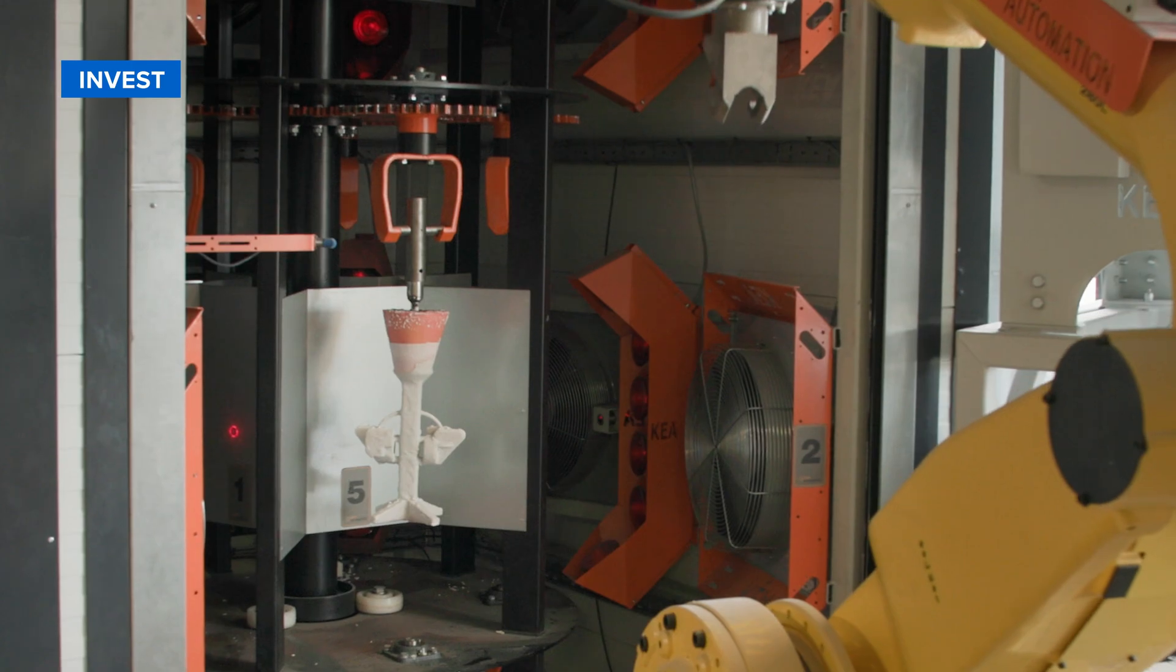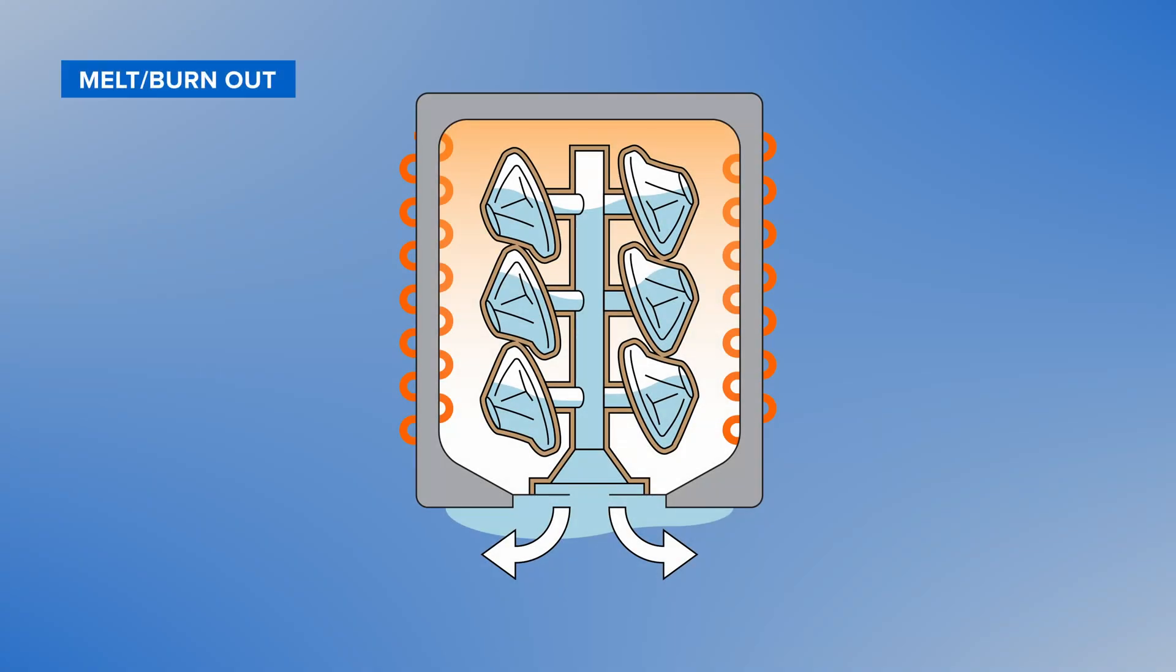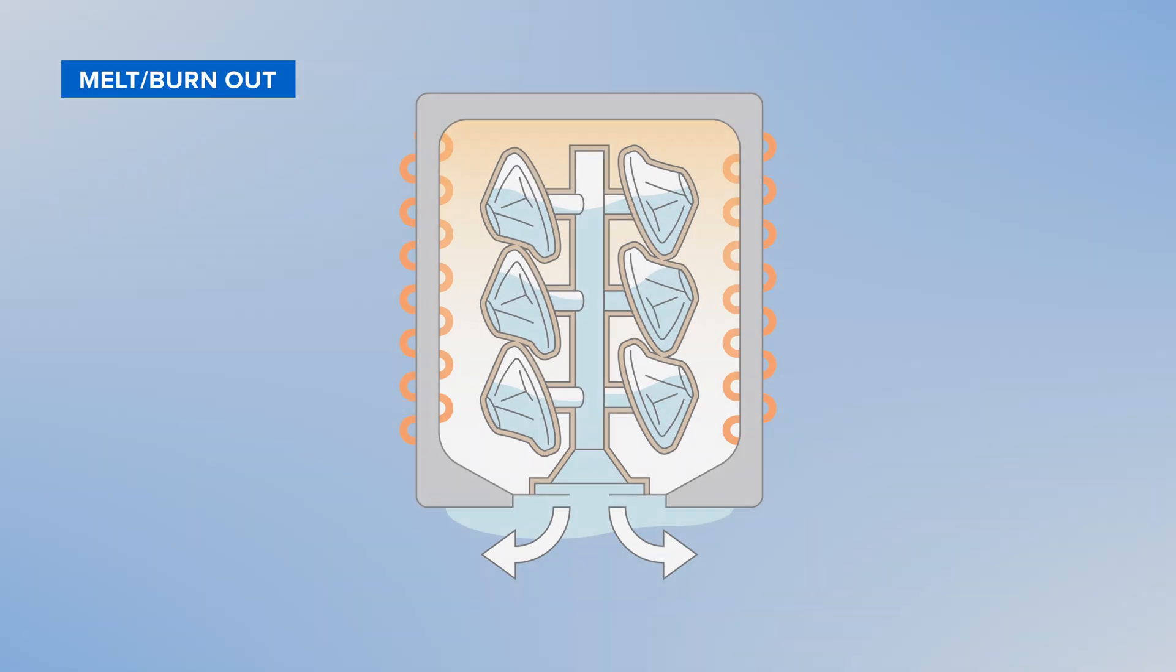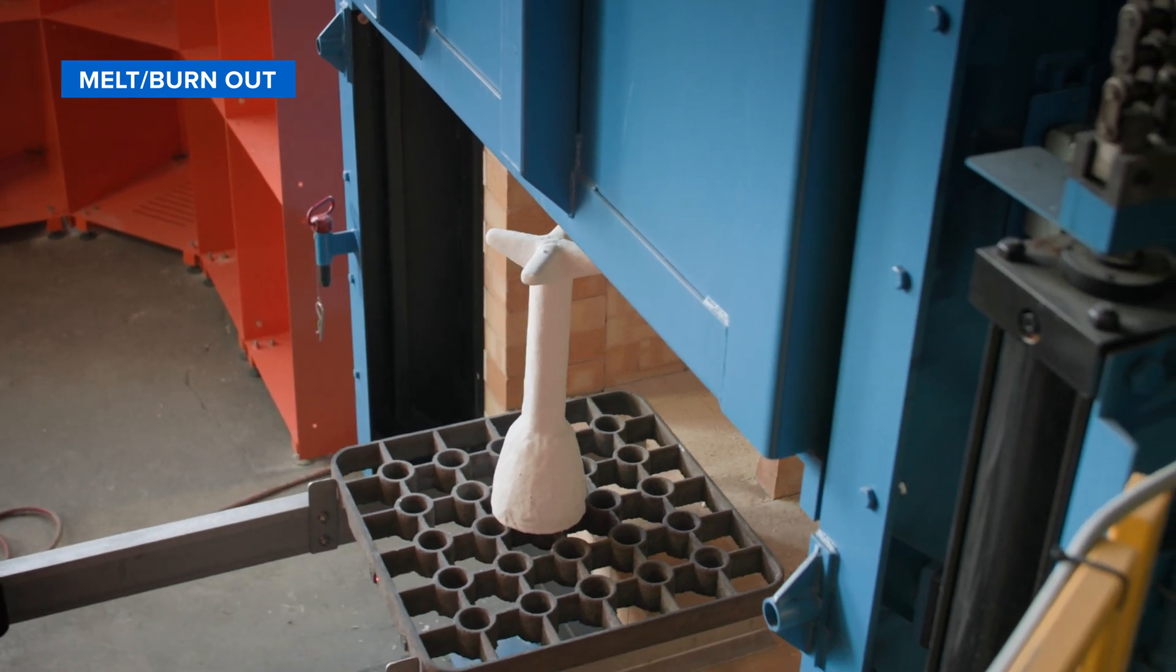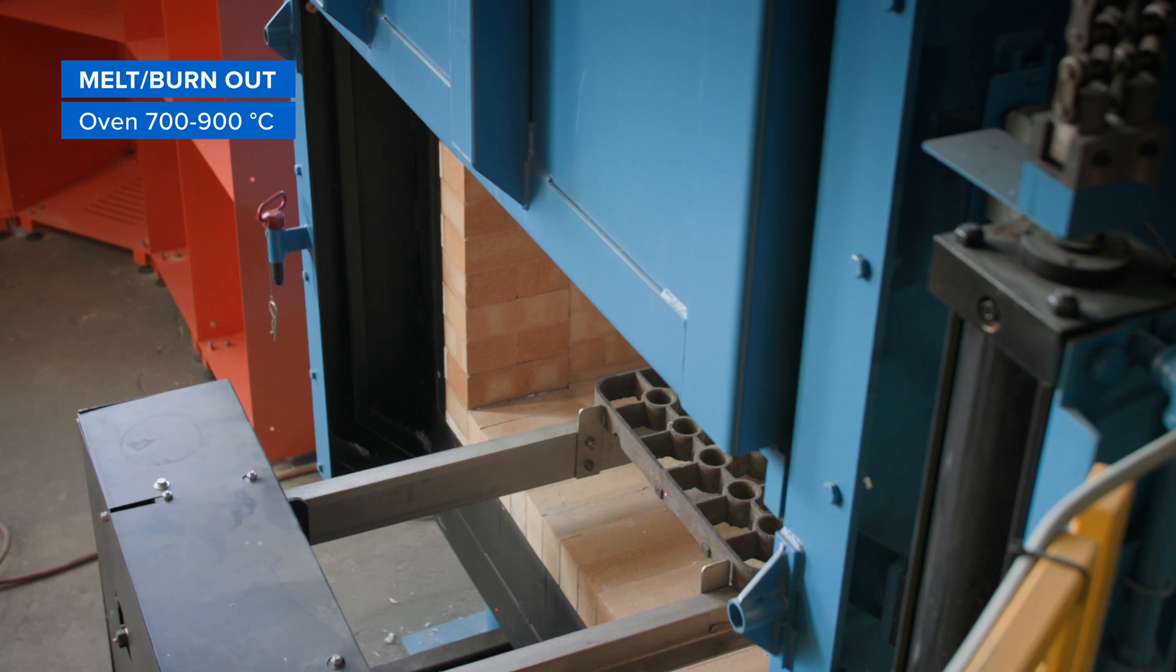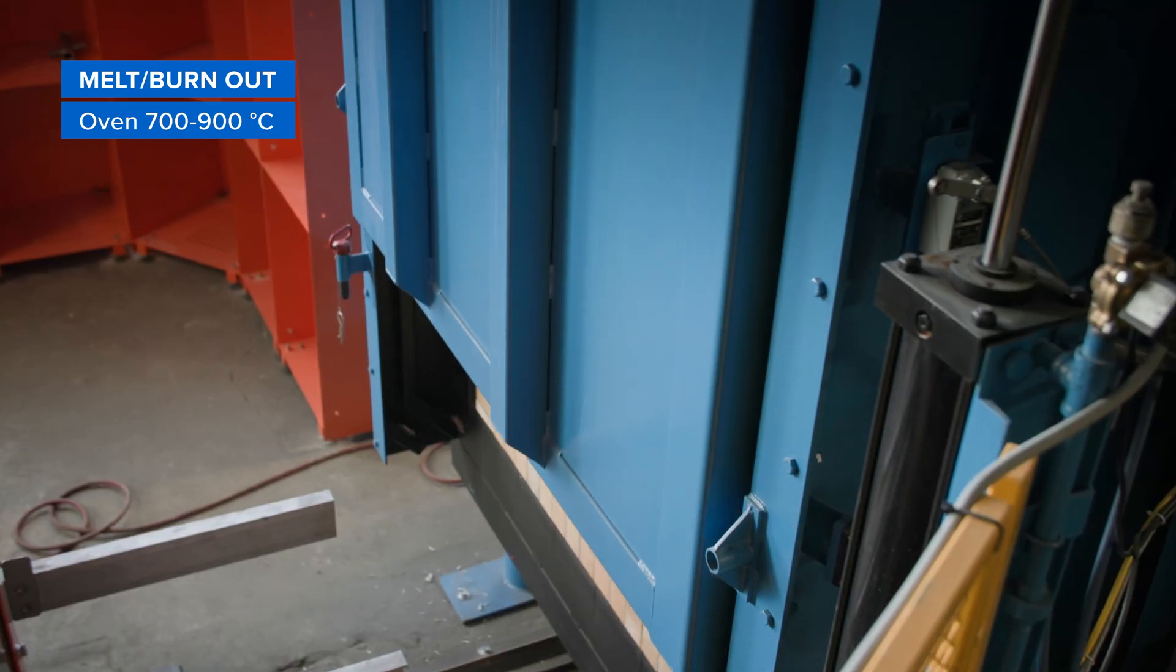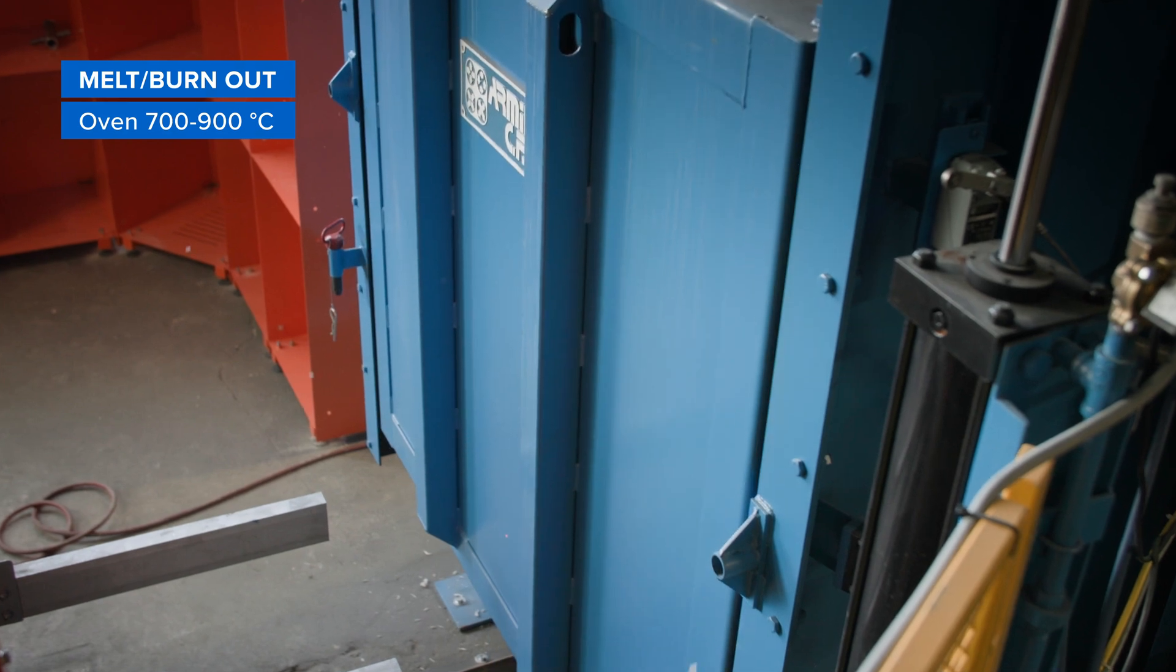Once the coating process has finished, transfer your casting tree to an oven to burn out the resin pattern and harden the investment. To efficiently and cleanly burn out 3D printed resin, make sure your oven can flash fire the parts at 700 to 900 degrees Celsius. The resin pattern will be burned away with only a minimal amount of remaining ash, which can be blown free.